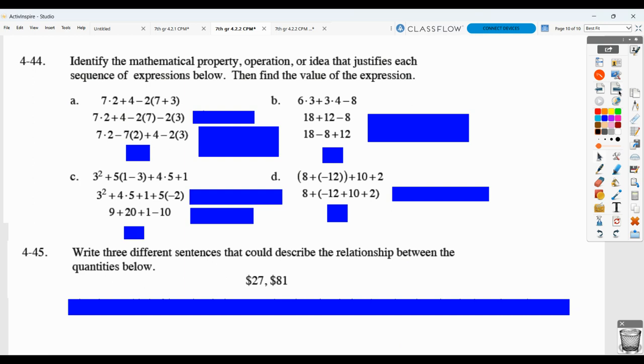Here, you have to identify the property, operation, or idea that justifies going from one line to the next. And, then, find the value. So, what we have here is seven times two plus four minus two times, in parentheses, seven plus three. And, when we look at what the next line says, well, what has occurred? The two has been multiplied by the seven. That's what we're seeing here. And, then, the two has been multiplied by the three. That's what we're seeing here. So, we know that is called the distributive property. So, when you take that number in front and you distribute it to the numbers inside, and, by distributing, we mean multiplying by those, that is called the distributive property.